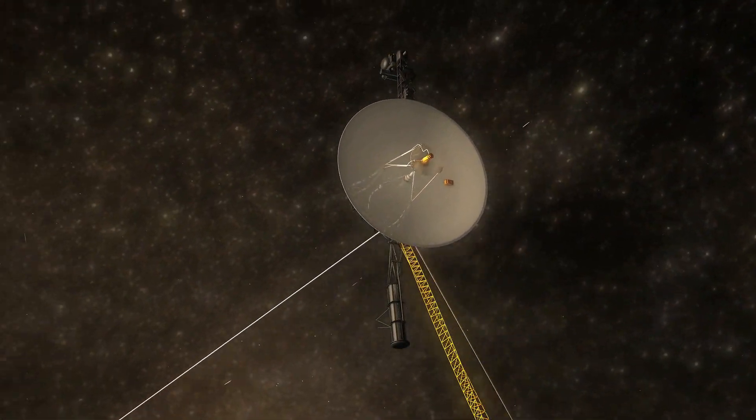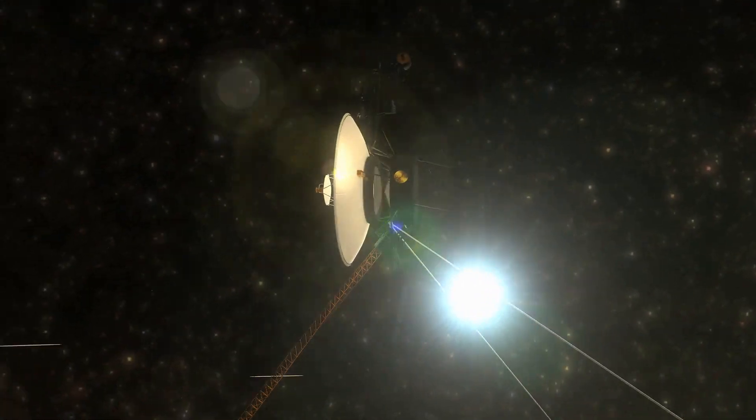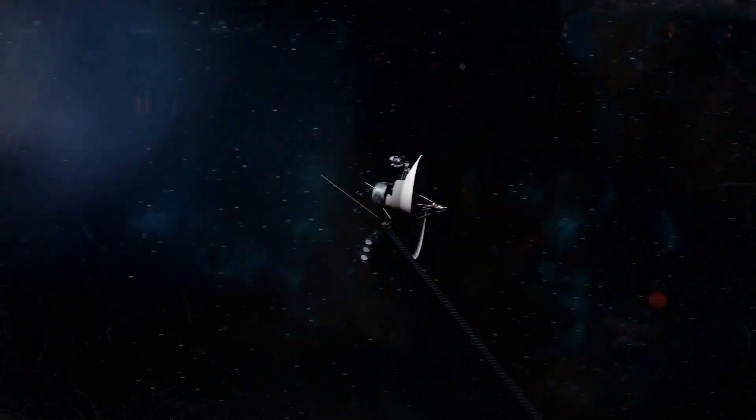You might know that Voyager 1 moves at a speed of 17 kilometers a second and it took 35 years for it to leave the solar system.